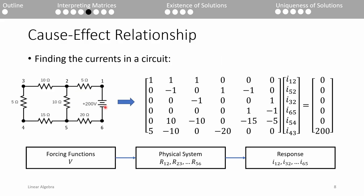Here's a simple circuit problem to demonstrate the cause-effect relationship. We want to find the current in each branch when we apply a 200 volt voltage source. The current in each branch will vary depending on the resistances. The actual amount of current flowing in each branch can be computed via Ohm's law, KVL, and KCL. Sometimes, you'll be asked to derive the system of equations. Other times, we'll just give it to you.